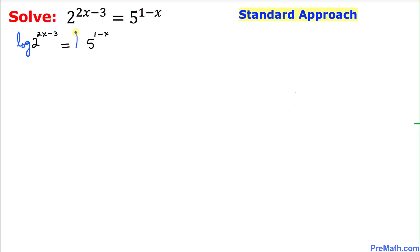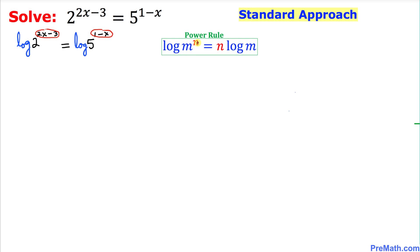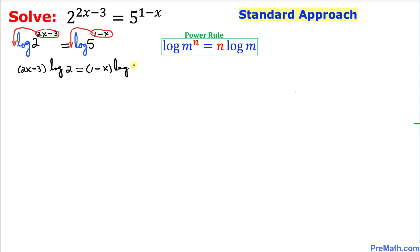On the left hand side, 2x minus 3 is our exponent for 2, and 1 minus x is the exponent for 5. So we will be using the power rule, which states that log of m power n allows us to bring n to the front. Therefore, on the left hand side this exponent comes to the front, and on the right hand side this exponent comes to the front as well. We can write this as: (2x minus 3) times log of 2 equals (1 minus x) times log of 5.